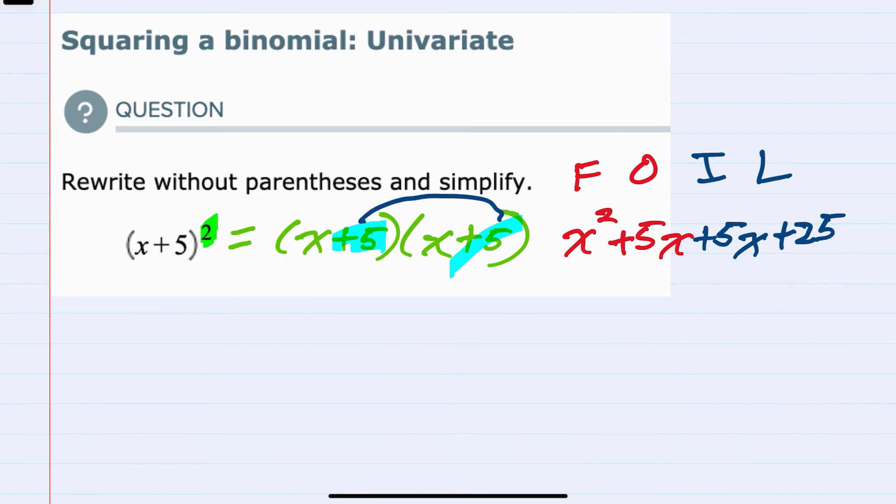Then to simplify, we would want to combine these like terms, leaving us with an x squared. The 5x plus 5x gives us a plus 10x. And then we still have that constant term 25 to bring down.